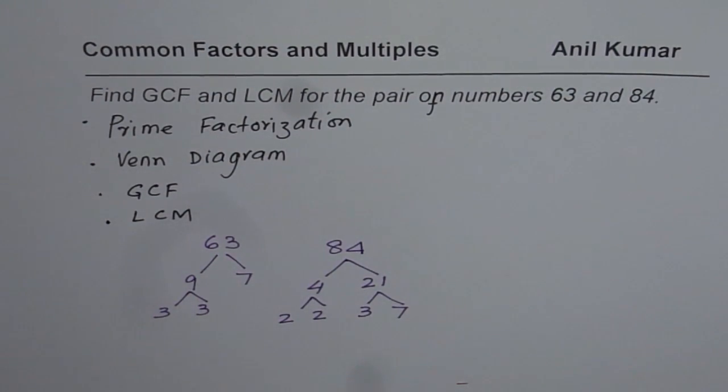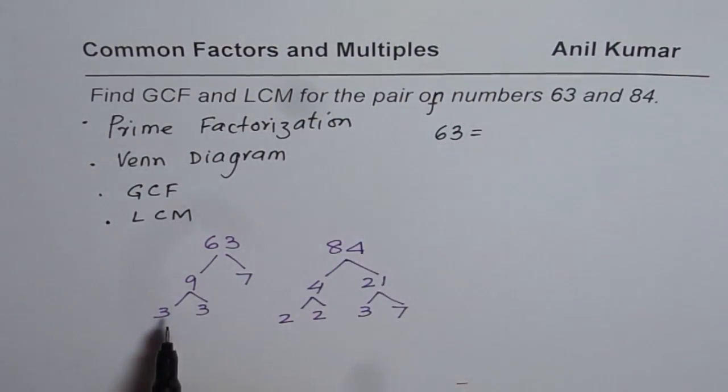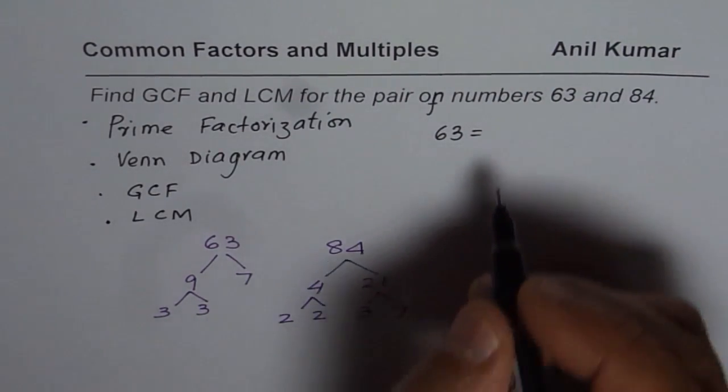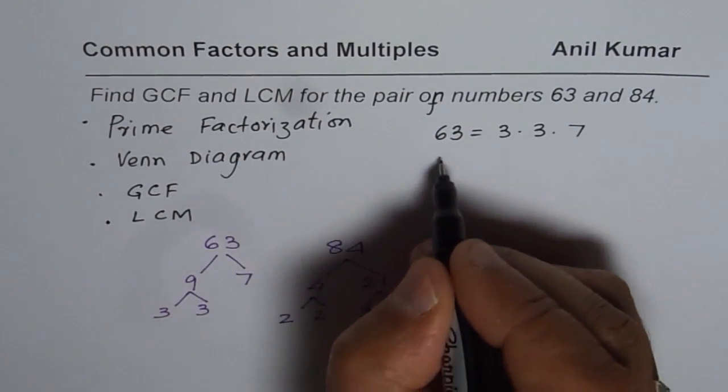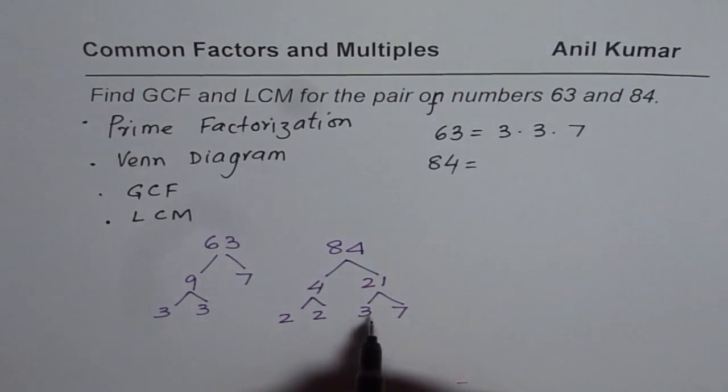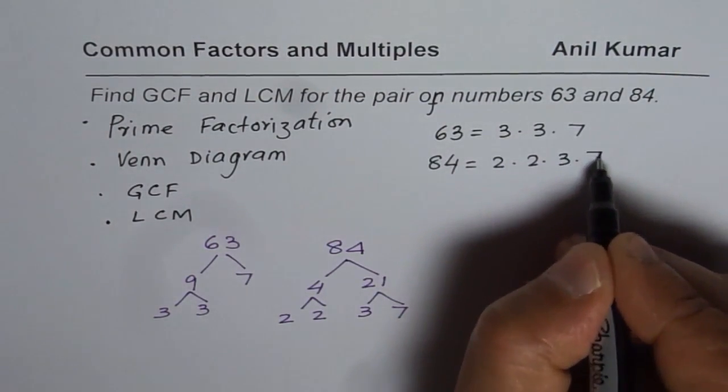Now from here we can write 63 as equal to product of these prime factors: 3, 3 and 7, right? So it is 3 times 3 times 7. And 84 can be written as 2 times 2 times 3 times 7.